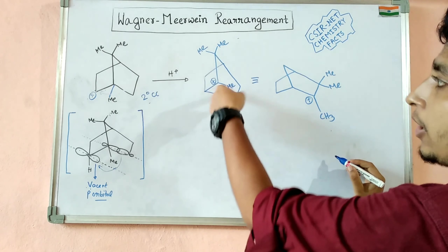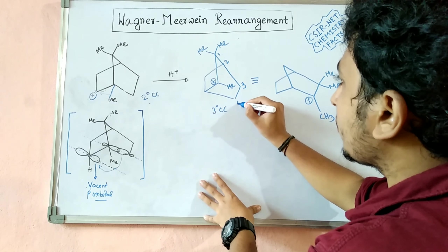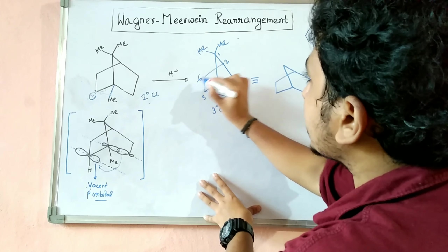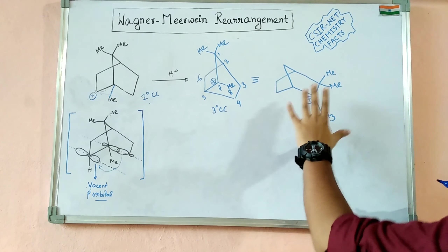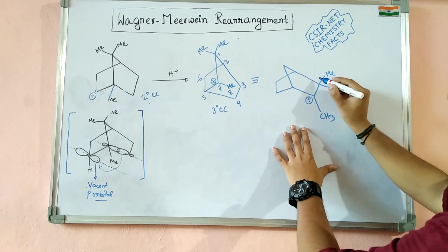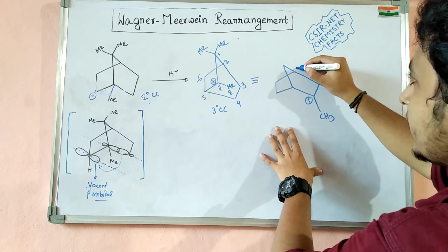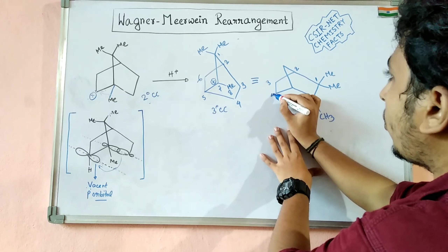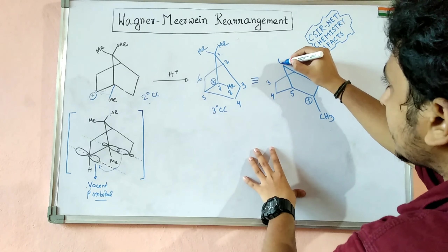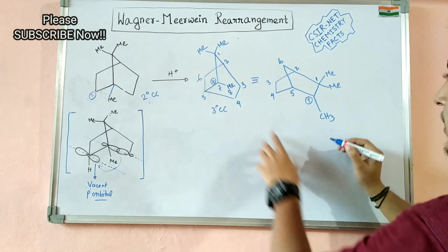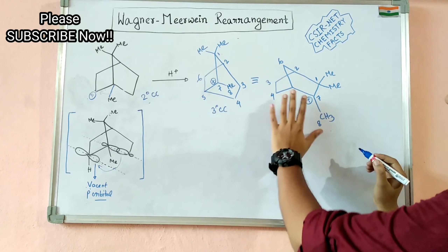Looking at the redrawn compound and numbering the carbons — 1, 2, 3, 4, 5, 6, 7, and 8 — and then numbering the product structure similarly as 1, 2, 3, 4, 5, 6, 7, and 8, we can see that these two structures are actually equivalent.